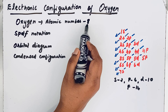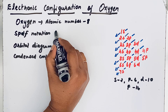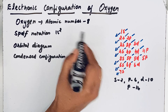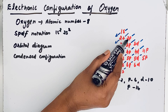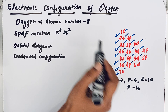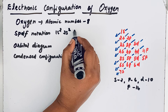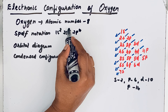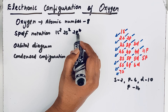In SPDF notation, we write 1s² first, then 2s², then the 2p orbital. The p orbital can hold a maximum of 6 electrons, but we only have 8 electrons total. So we get 2p⁴. Check: 2 plus 2 plus 4 equals 8. So the SPDF notation is 1s² 2s² 2p⁴.